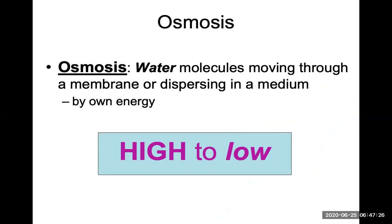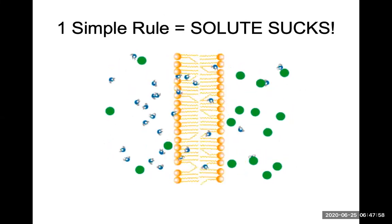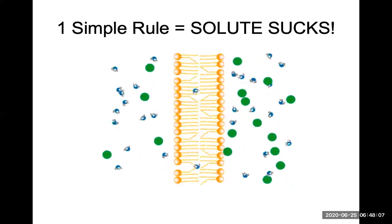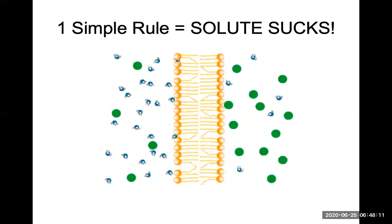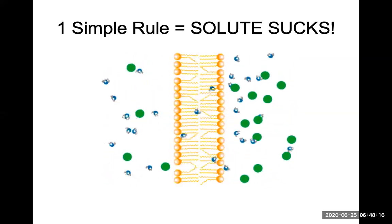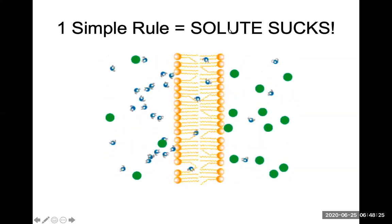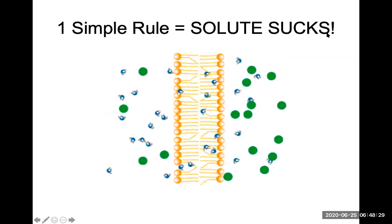Osmosis is the diffusion of water — water molecules moving through a membrane or dispersing in a medium passively by its own energy. Water travels from an area of high water concentration to an area of low water concentration. There's one simple rule: solutes suck the water. This means water will always move into an area where there's a greater solute concentration. The area of low water concentration will be where there are more solutes, so solutes suck the water in that direction.